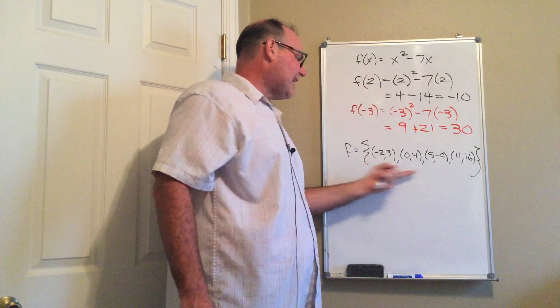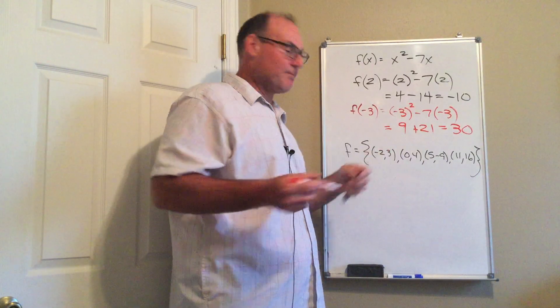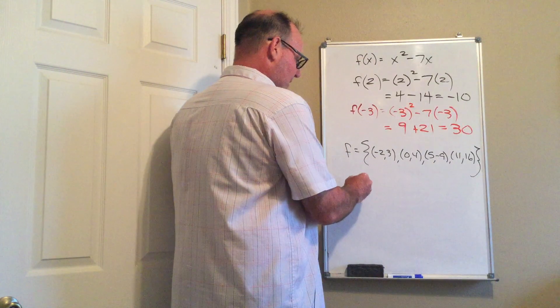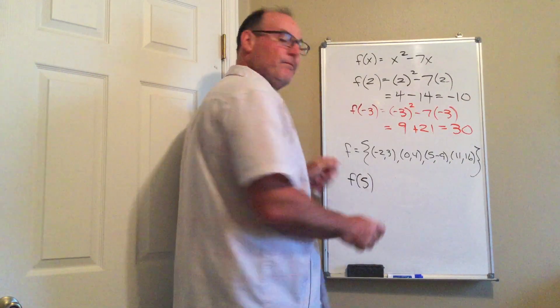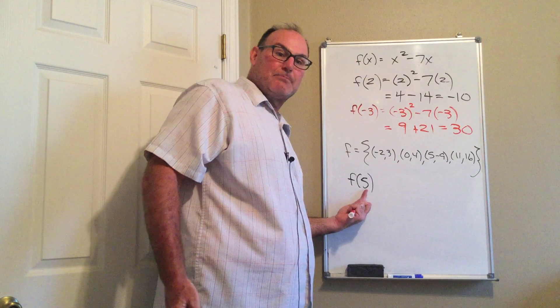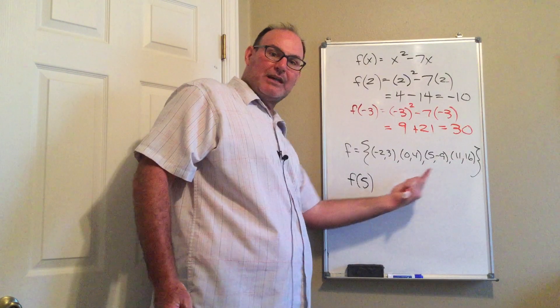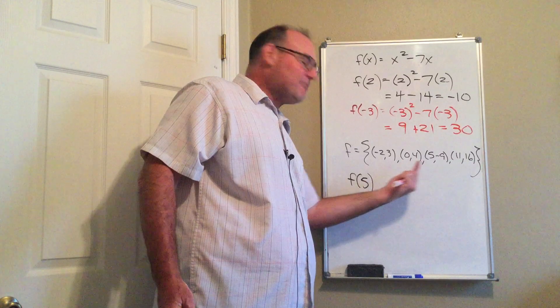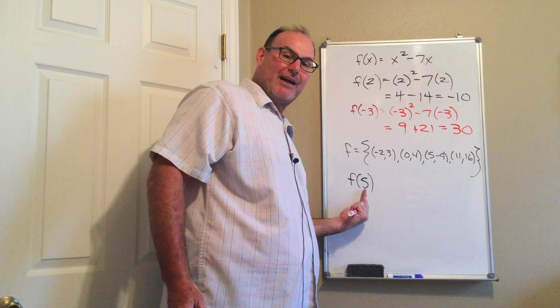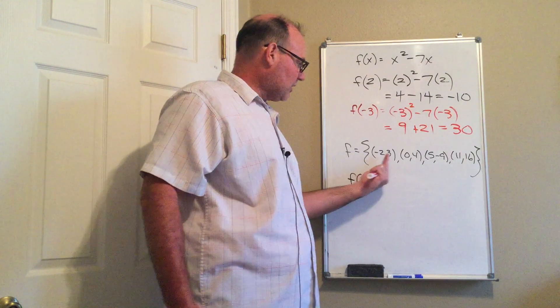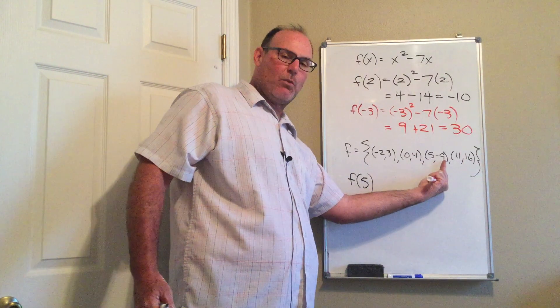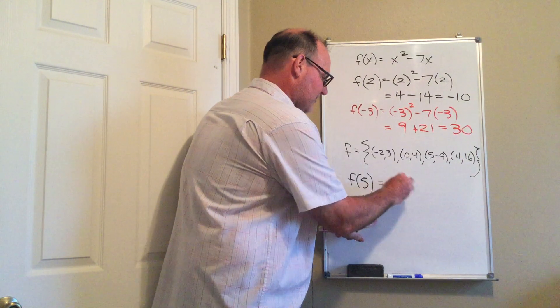Now we can do the same thing with a list of ordered pairs. I could ask you on this particular problem what is the function value at 5. Well again, in my function notation what I'm plugging in, this is my x value. So I'm going to look at the ordered pairs and I'm going to ask, does one of my ordered pairs define a relationship between the x value 5 and another value? And I look and I say, oh here it is, when the x value is 5 that corresponds to the y value negative 9.